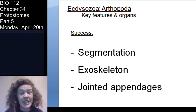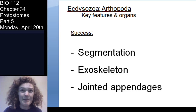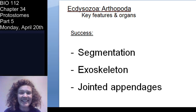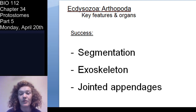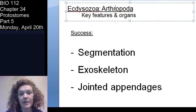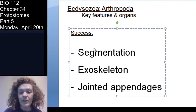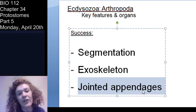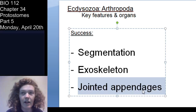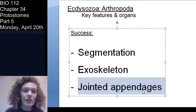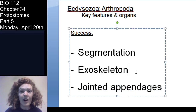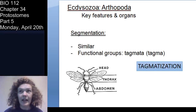Why are arthropods so successful? We're reviewing from lab. Big ways these guys are successful: first, their segmented bodies — that's where arthropoda comes from. Arthro means jointed, poda means feet or appendages. They also have a chitinous exoskeleton — other proteins are also part of that exoskeleton. That segmentation, those jointed appendages, and that exoskeleton had a huge part in making these organisms successful and essentially ubiquitous throughout the world.